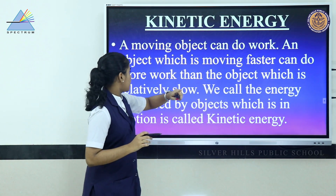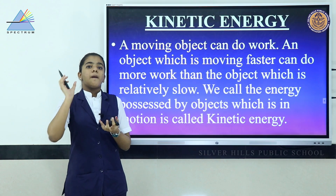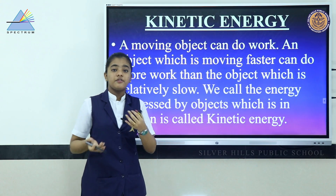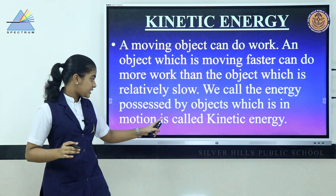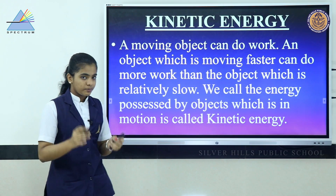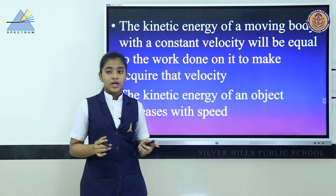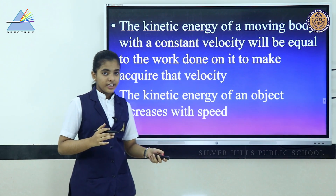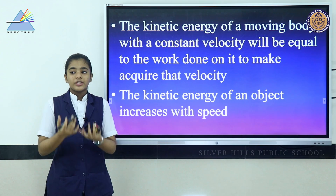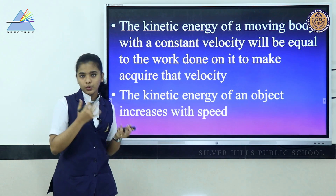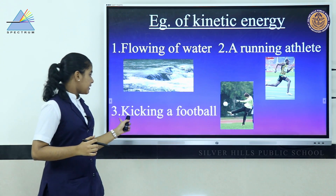A moving object can do work, and an object moving faster can do more work than one moving slowly. The energy possessed by an object in motion is called kinetic energy. The kinetic energy of a moving body with a constant velocity equals the work done to acquire that velocity. Kinetic energy increases as the speed of the object increases. Examples include flowing water, a running athlete, and kicking a football.